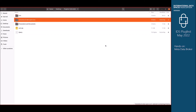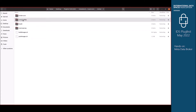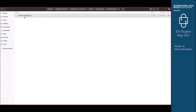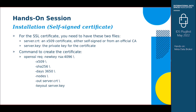I've already cloned the metadata broker open core project. You can see the README file, which is the installation guide. The Docker files are hosted under a list of folders — you go to Docker, then the compose file, then broker localhost. This is the Docker Compose file we need to configure. Before that, we need to prepare a self-signed SSL certificate.